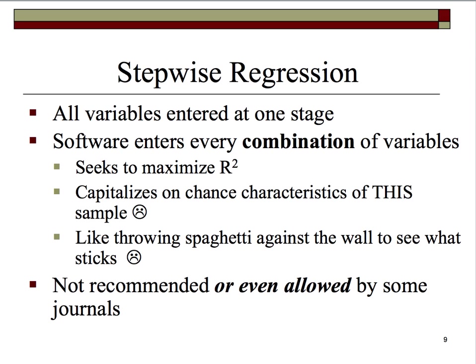The idea behind using samples to make inferences about a population is that we want to generalize from the sample we've analyzed to a larger population. If we use stepwise, we may find three or so predictors that maximize variance explained in this sample, but if we ran stepwise on another sample, we might find a completely different set of predictor variables.